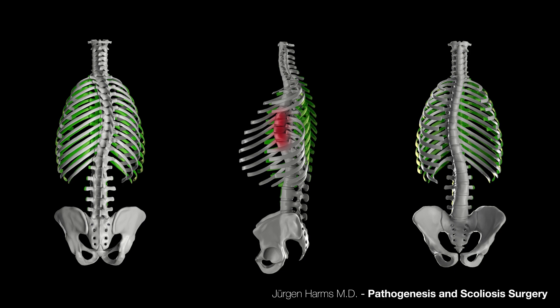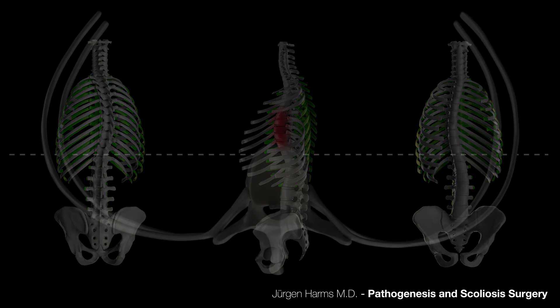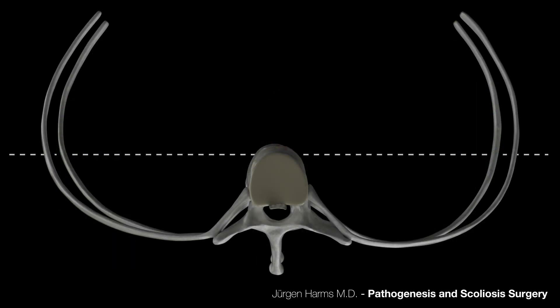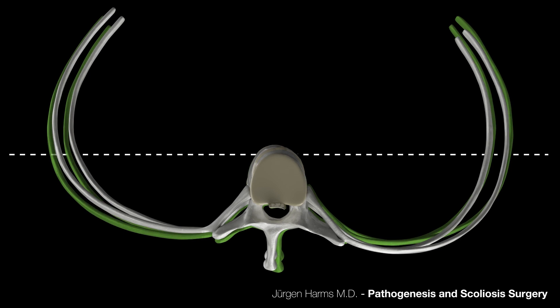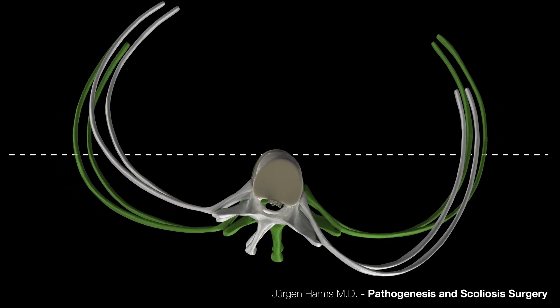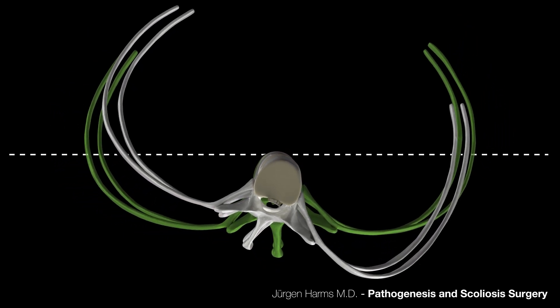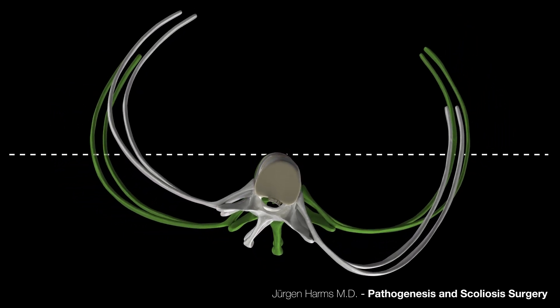The condition is visualized here in the sagittal and coronal plane. In the axial view, the vertebral body's rotational movement, together with the medial rib portion attached to the vertebral body, turns toward the convexity of the curve. The spinous process rotates toward the concavity of the curve.